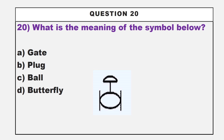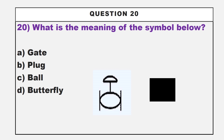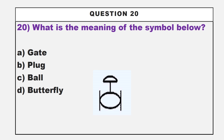What is the meaning of the symbol shown below? A symbol is given here. Option A: gate. Option B: plug. Option C: bolt. Option D: butterfly. The correct answer is option C, bolt.